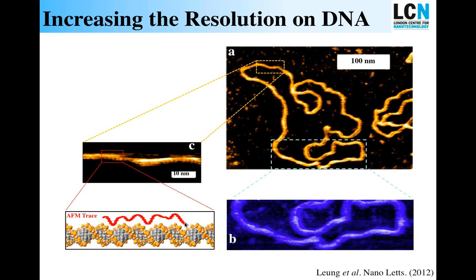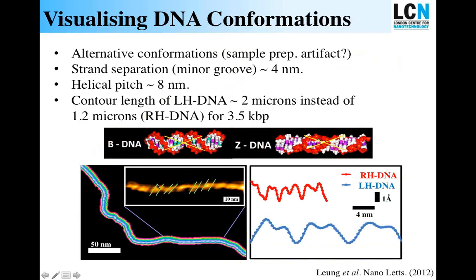We're extremely pleased with this result. We've also visualized different conformations of the DNA, including the left-handed form. Green arrows have been placed on the image to show the difference between the right-handed and left-handed forms of DNA. This is an extremely elongated form of left-handed DNA — almost double the length of the B-form — which could well be a sample preparation artifact. Knowing that we can visualize these different DNA conformations is really important for moving forward with high-resolution DNA imaging.